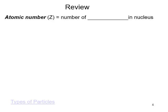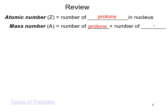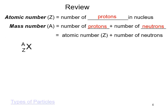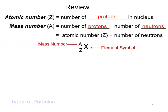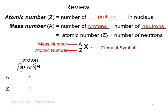Let's do a quick review of atomic particles. The atomic number is the number of protons in the nucleus; the mass number is the number of protons and neutrons. Isotopic notation gives the element symbol along with the mass number and atomic number. A proton has a mass number (A) of 1 and atomic number (Z) of 1. A neutron has an A of 1 and a Z of 0.